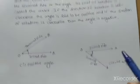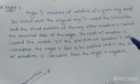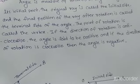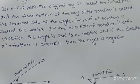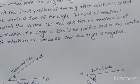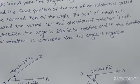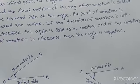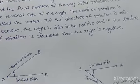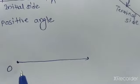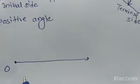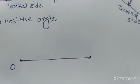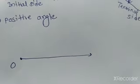So from the above definition, you can say that this is our initial side, and after rotation of an angle, this gives us the terminal side. The direction of rotation gives us positive and negative angles. The measure of an angle is the amount of rotation performed to get the terminal side from the initial side.